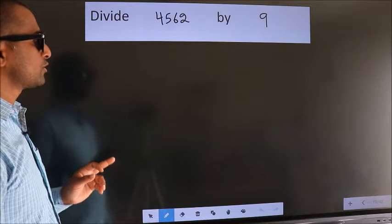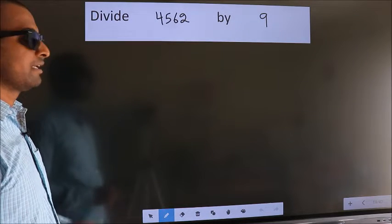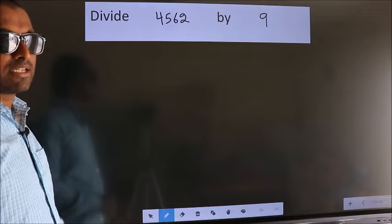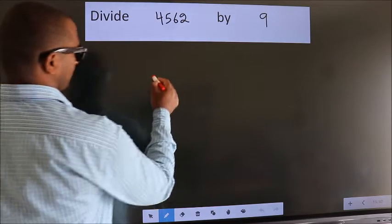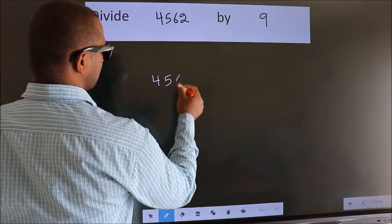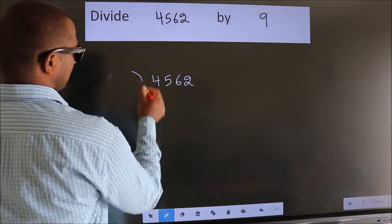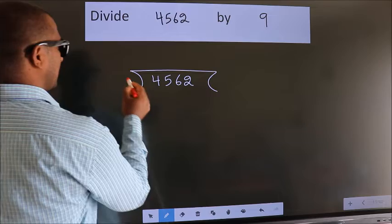Divide 4562 by 9. To do this division, we should frame it in this way: 4562 here, 9 here.